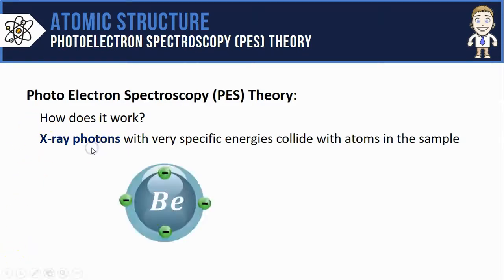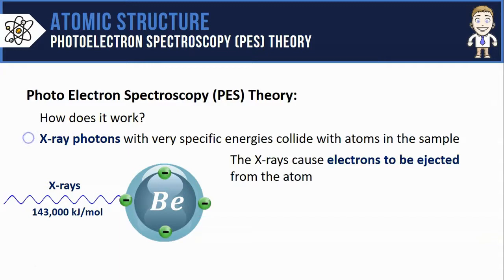So let's say we inject some beryllium atoms into the photoelectron spectrometer. They're going to get bombarded with x-ray photons, and let's just say in this case those photons have energies of 143,000 kilojoules per mole. So those x-ray photons are actually going to collide with the electrons of the atom and as they do so they're going to cause them to be ejected, or essentially removed from the atom.